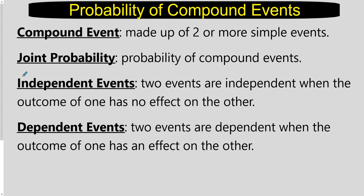Independent events are two events where one outcome has no effect on the outcome of the other — like flipping a coin and then pulling a card from a deck. Getting heads on your coin flip has no influence on whether you pull a queen out of the deck; they're completely unrelated. Dependent events happen when the outcome of one does have an effect on the other. For example, pulling marbles out of a bag with four blue and three red without replacing the first one — removing a marble changes the probability of the next draw.